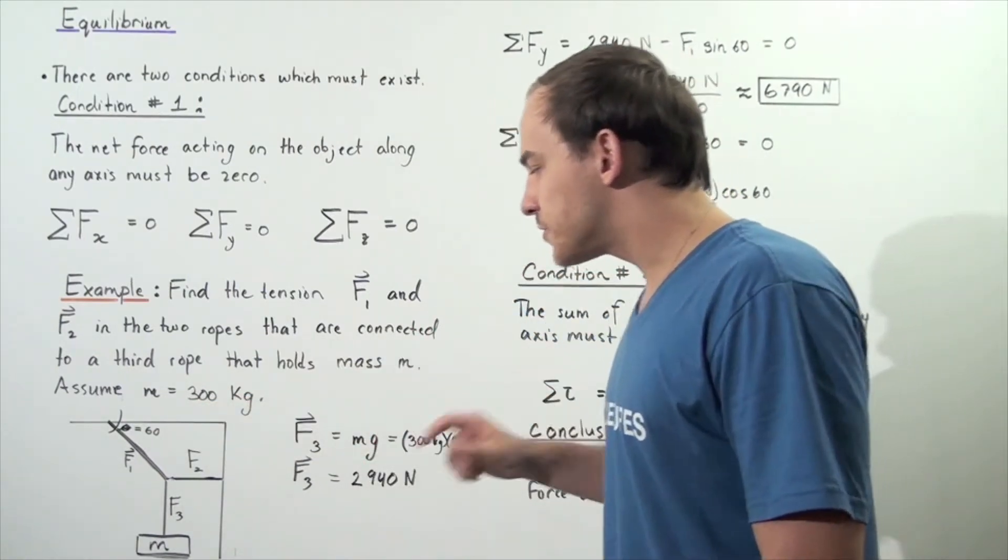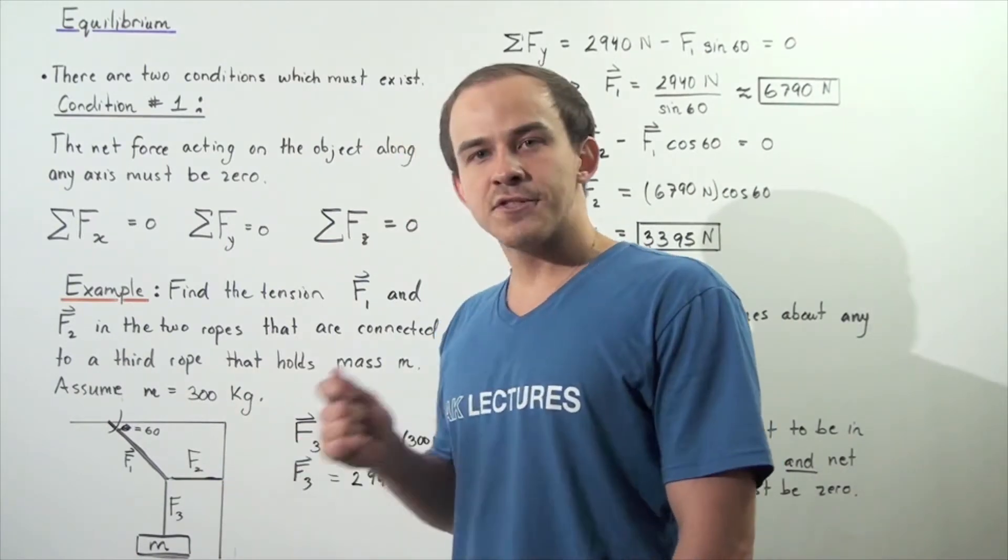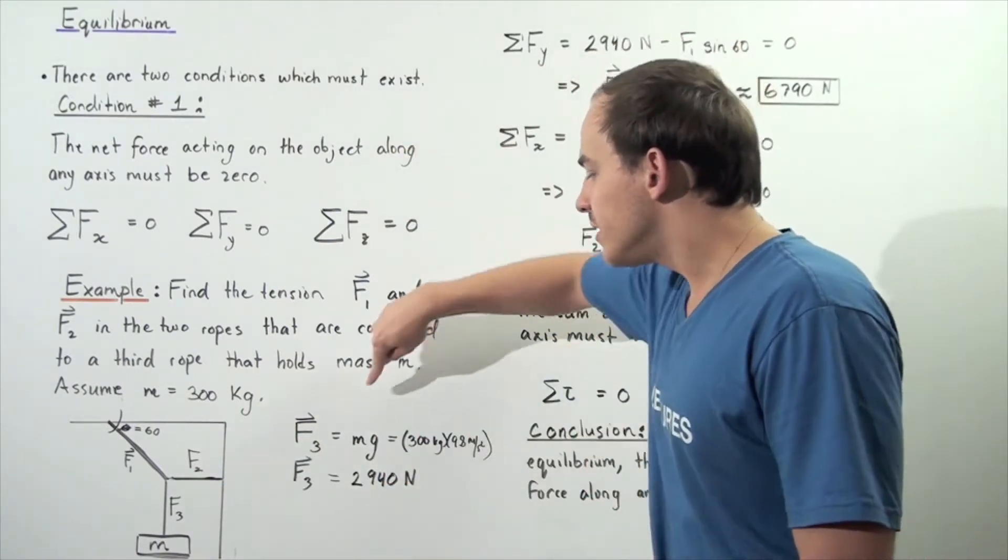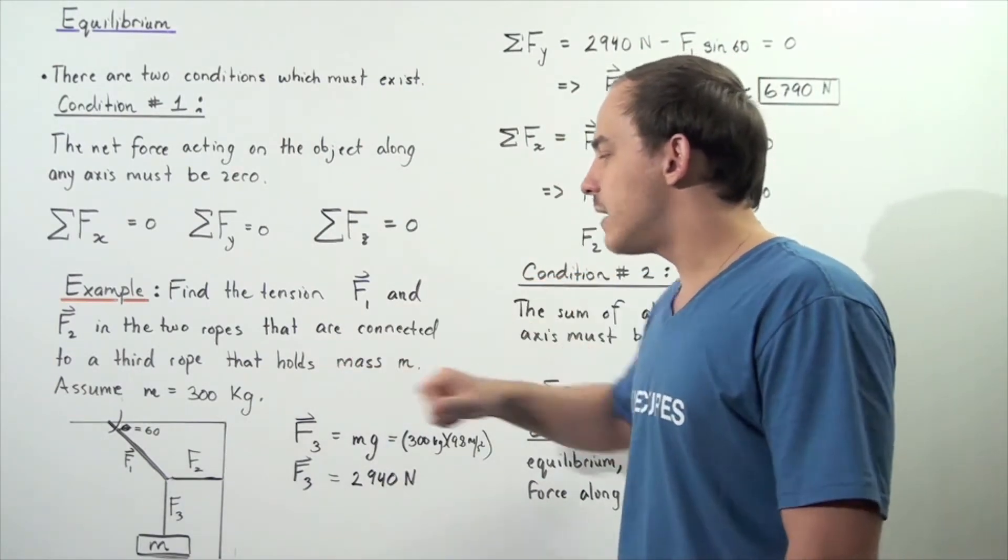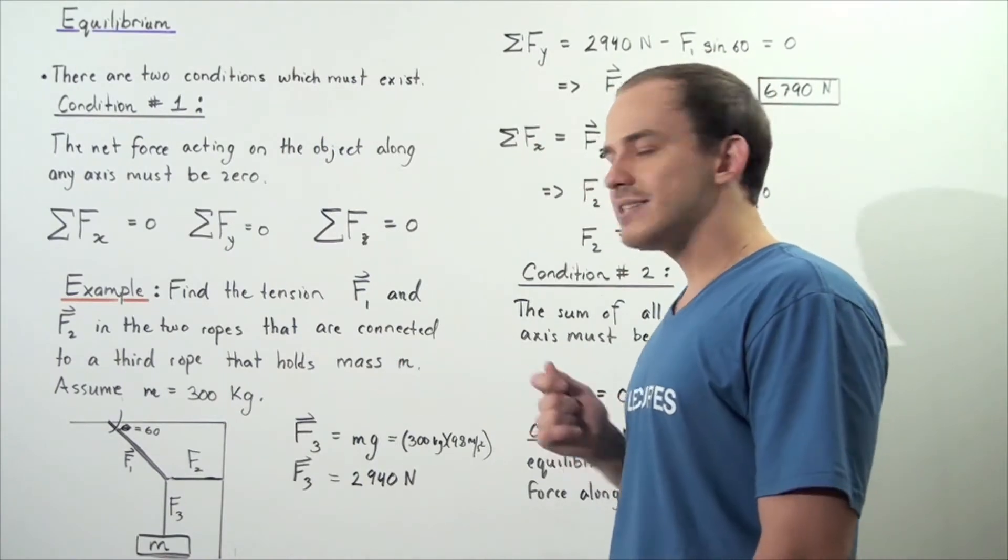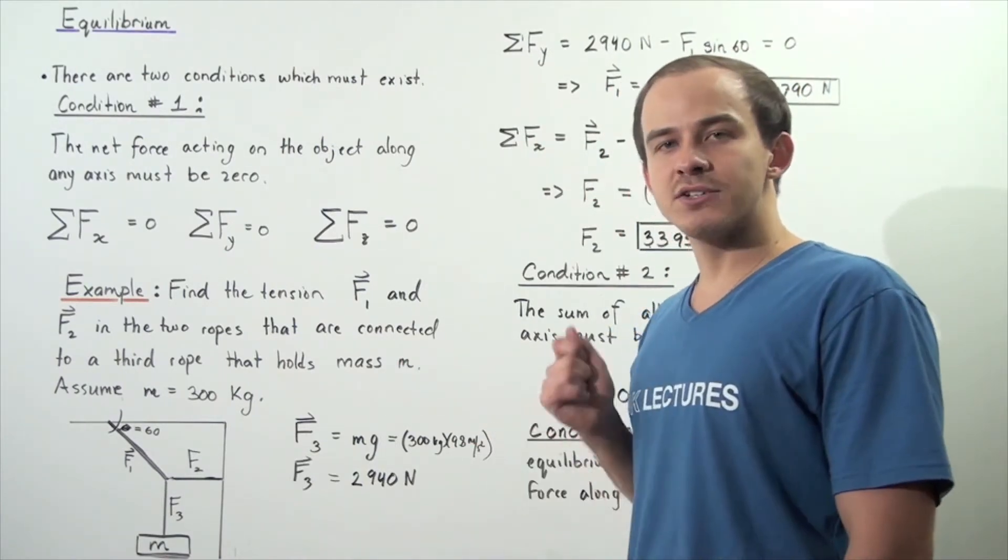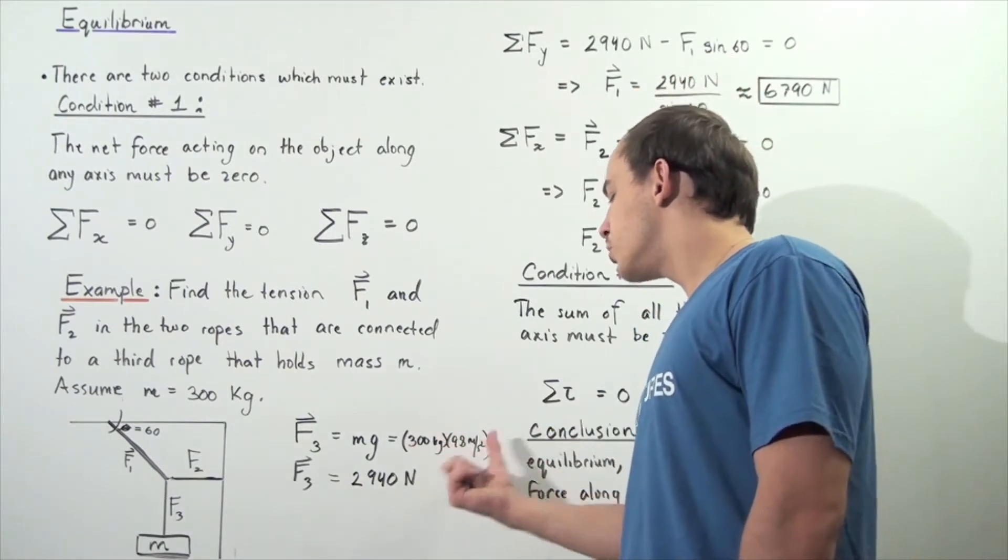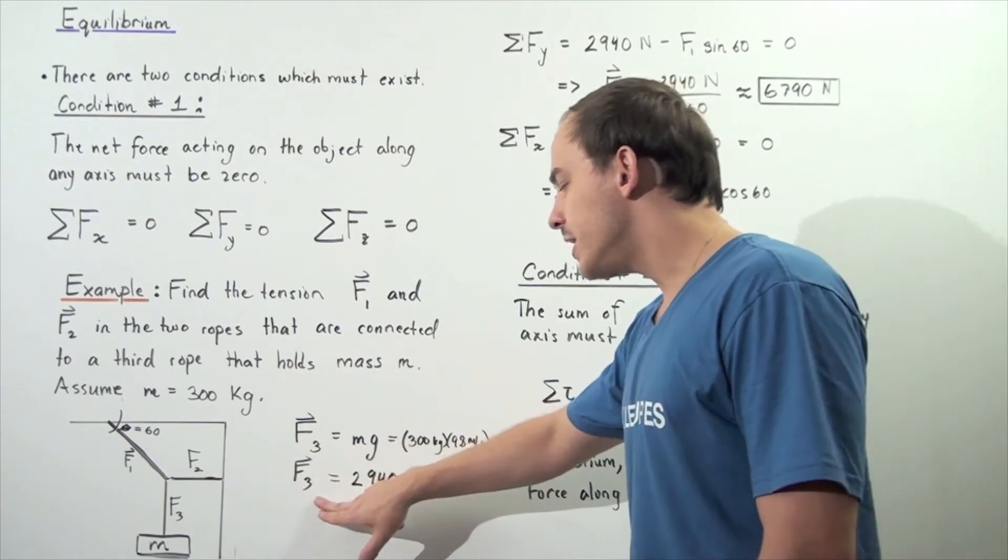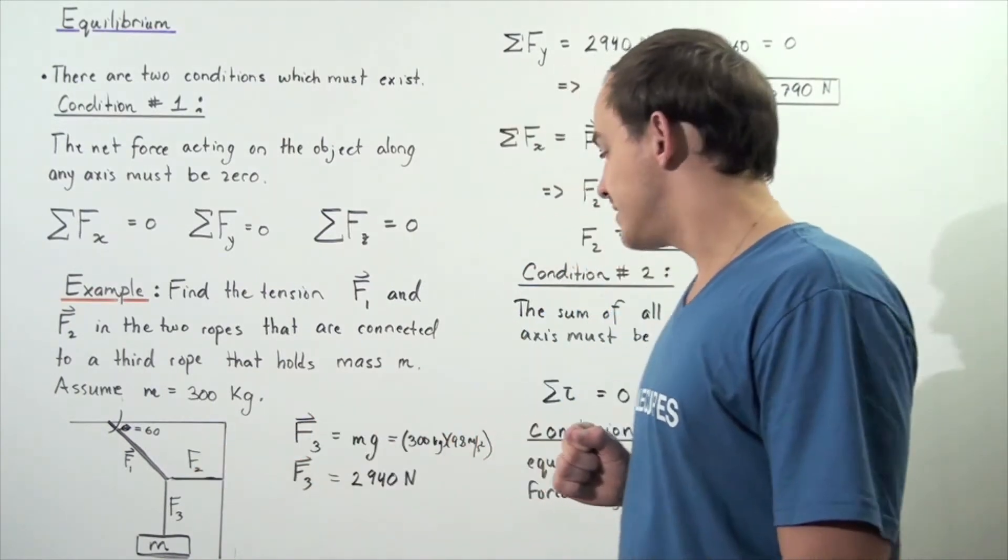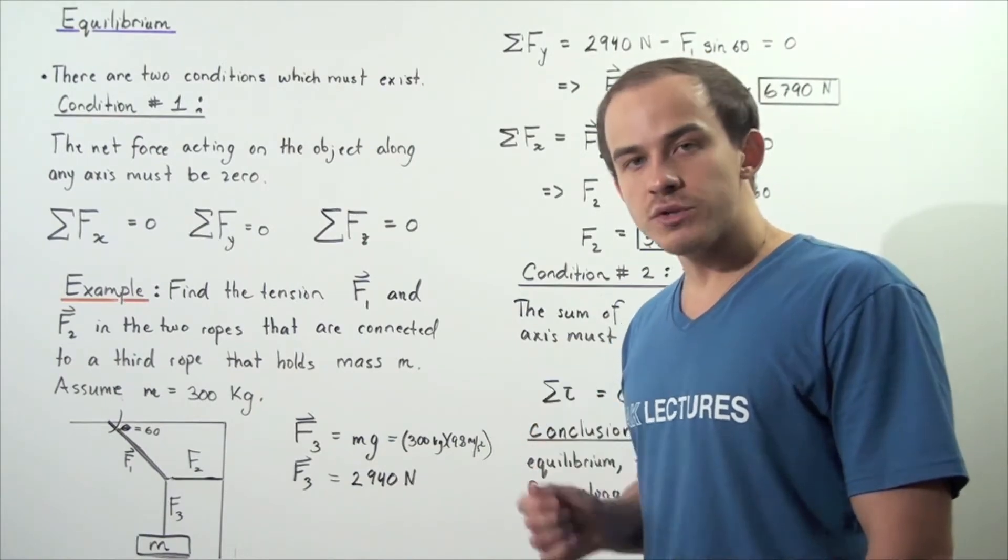So let's begin by first calculating force F3. Force F3 is equal to simply M times G, where M is the mass of the object 300 kilograms, and G is our gravitational constant 9.8 meters per second squared. So we take the product of these two values and we get that F3, force 3 in rope number 3, is equal to 2,940 newtons.